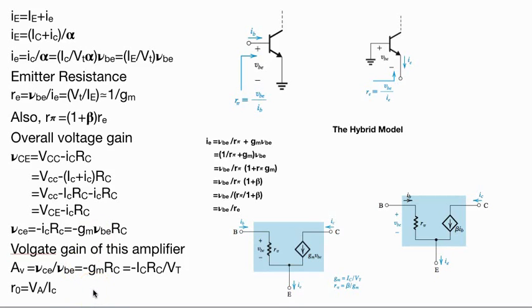When your Early voltage is given, ro is calculated by dividing Early voltage by IC.